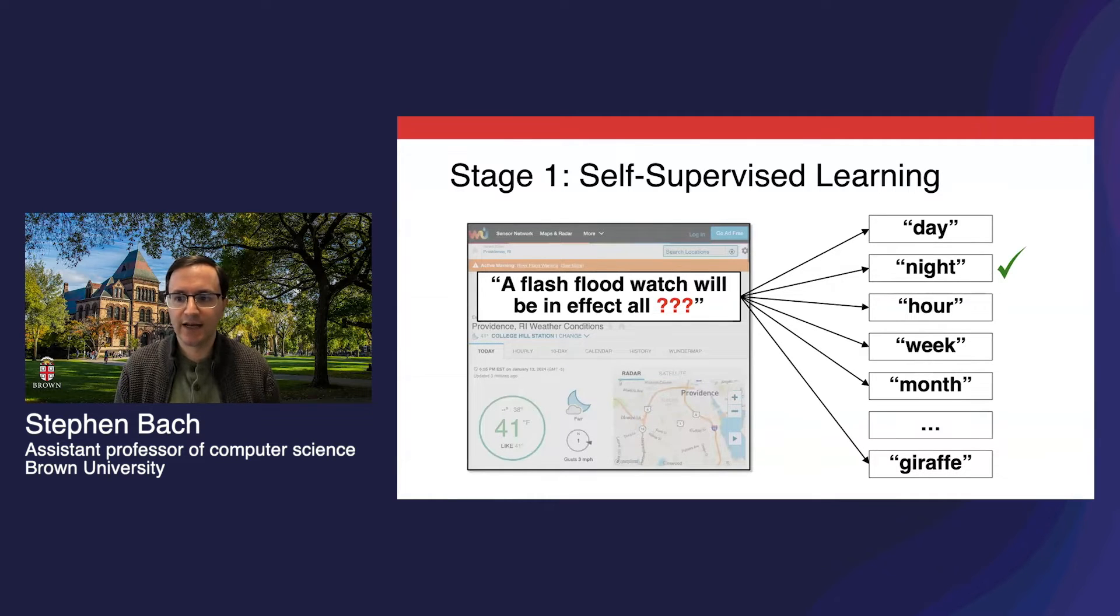It involves getting lots of unannotated or raw data and learning to predict missing pieces of it. The pieces aren't really missing, we're just hiding them from the model. So in the case of language modeling, this can take the form of predicting the next word in a sentence.